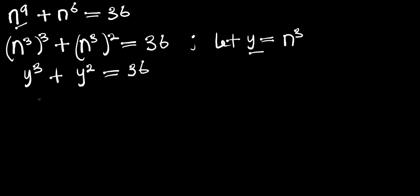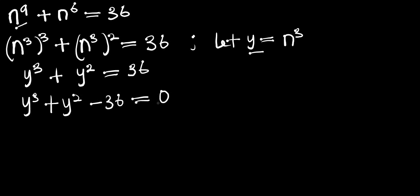We can rearrange this equation to get y to the power 3 plus y to the power 2 minus 36 equals 0. We need to solve this equation, and we can do so by testing values of y that will satisfy it.